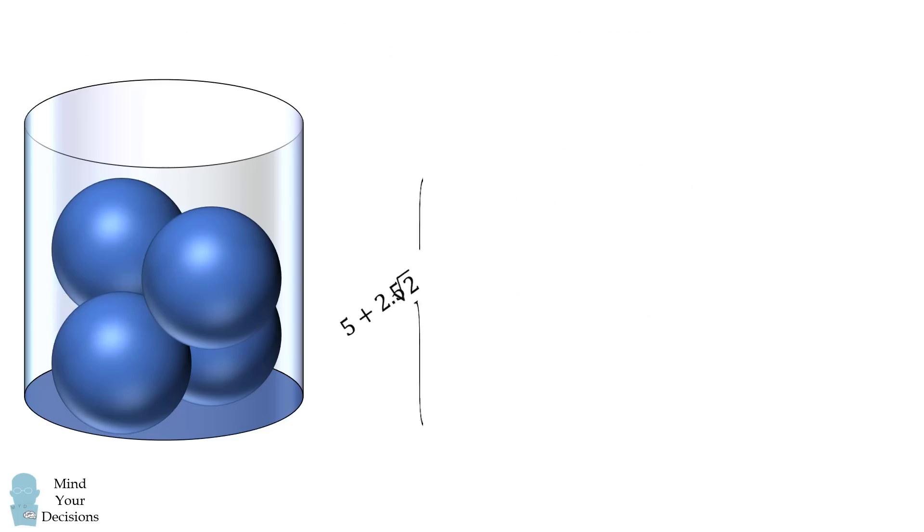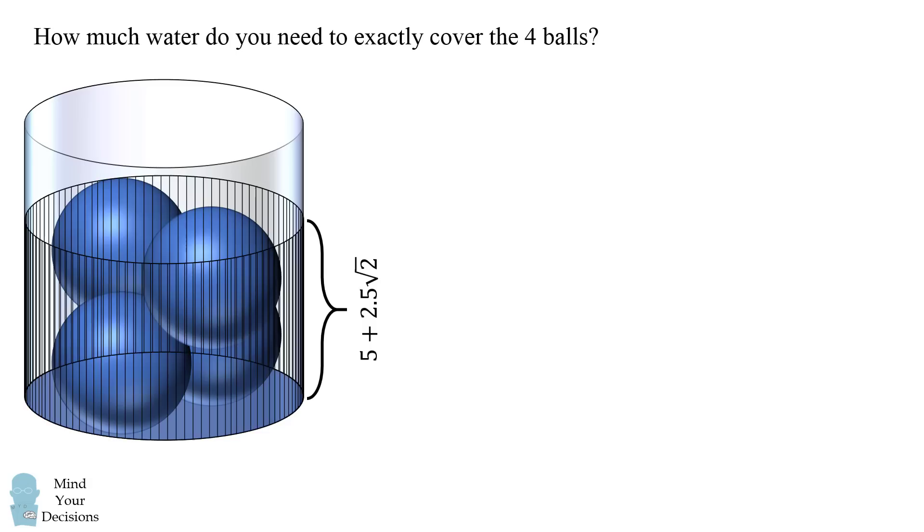We can now proceed to figure out how much water we need to fill to the top of these four balls. So consider a cylinder that goes from the bottom of the glass all the way to the top of these four balls. The water that will be needed to fill to this top will be the volume of this cylinder to cover all these balls minus the volume of the four balls.